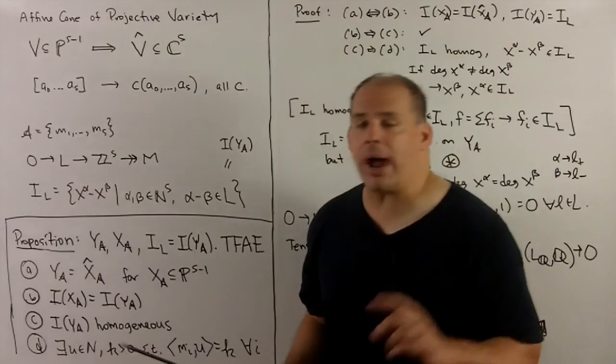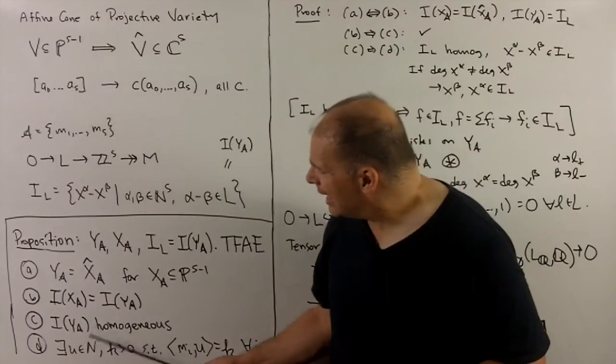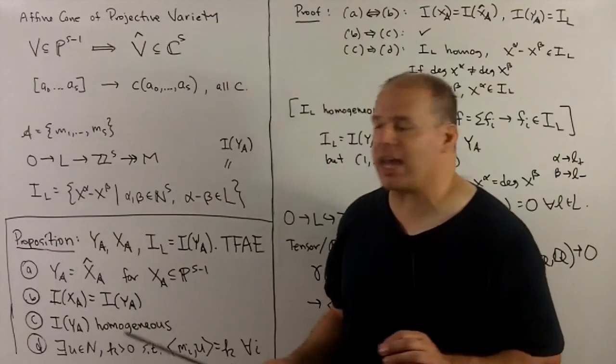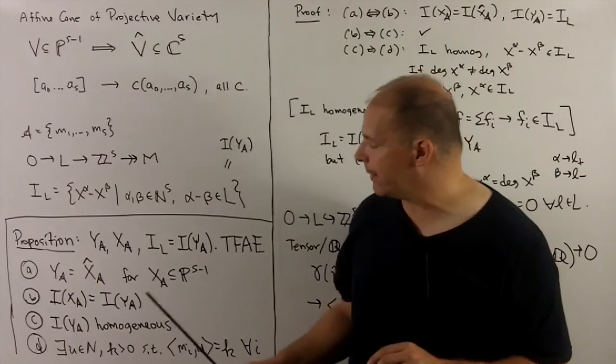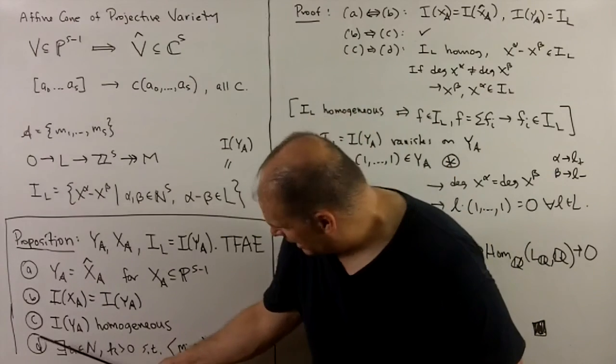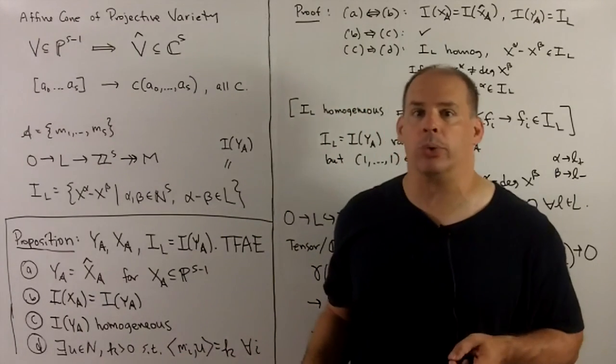Such that if we take the pairing of m sub i with u, we get k for any i. We'll try to give a better feel for this once we get past the proofs.